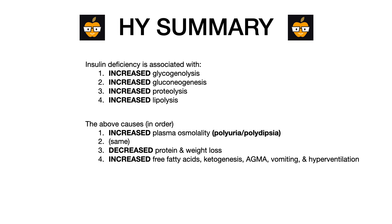Increasing all of these has a devastating effect on the body. Going down in order: one, increased glycogenolysis causes increased plasma osmolality, which manifests as polyuria and polydipsia. Two, increased gluconeogenesis causes the same. Three, increased proteolysis causes decreased protein and weight loss — that cachexia. In the vignette, the patient lost 10 pounds over two weeks, happening because of proteolysis. Four, increased lipolysis — the correct answer — causes increased free fatty acids, which causes increased ketogenesis, manifesting as vomiting and anion gap metabolic acidosis, which causes Kussmaul respirations.